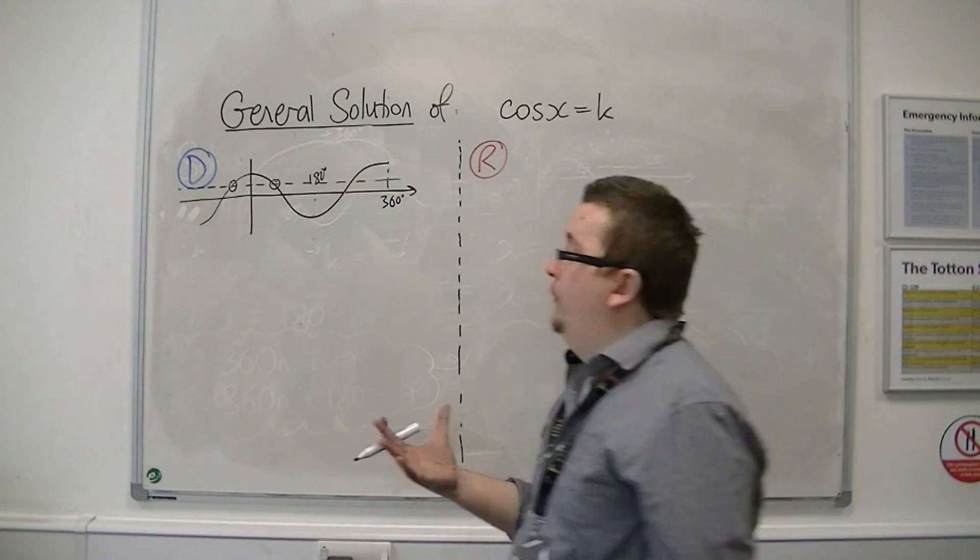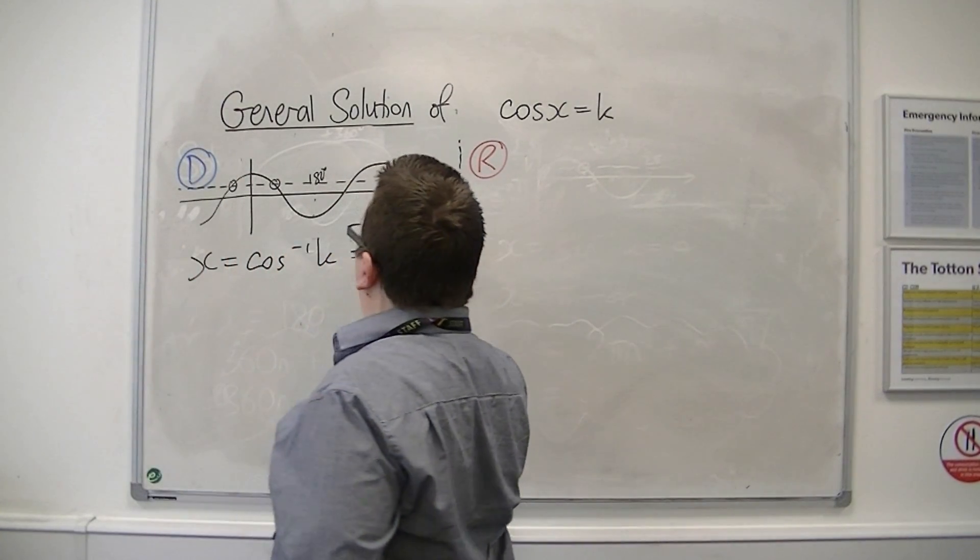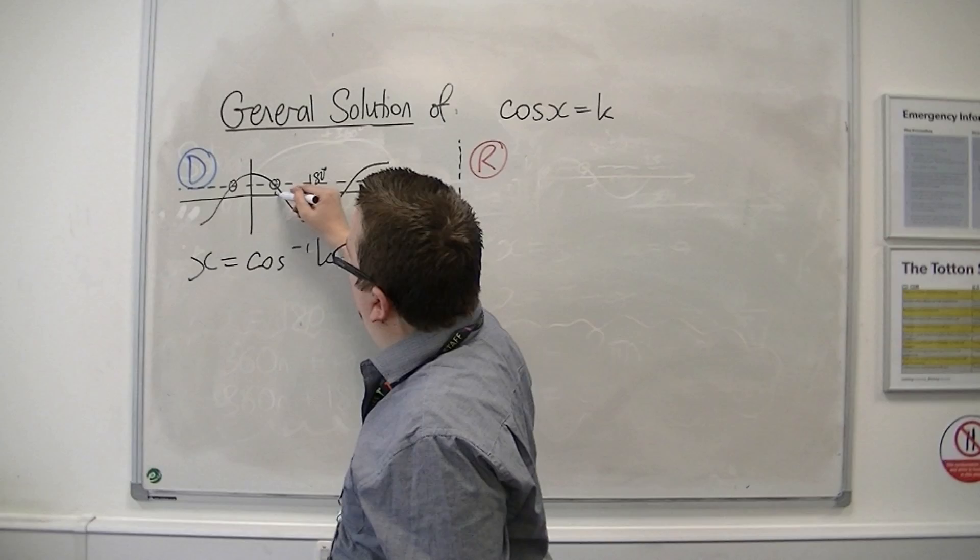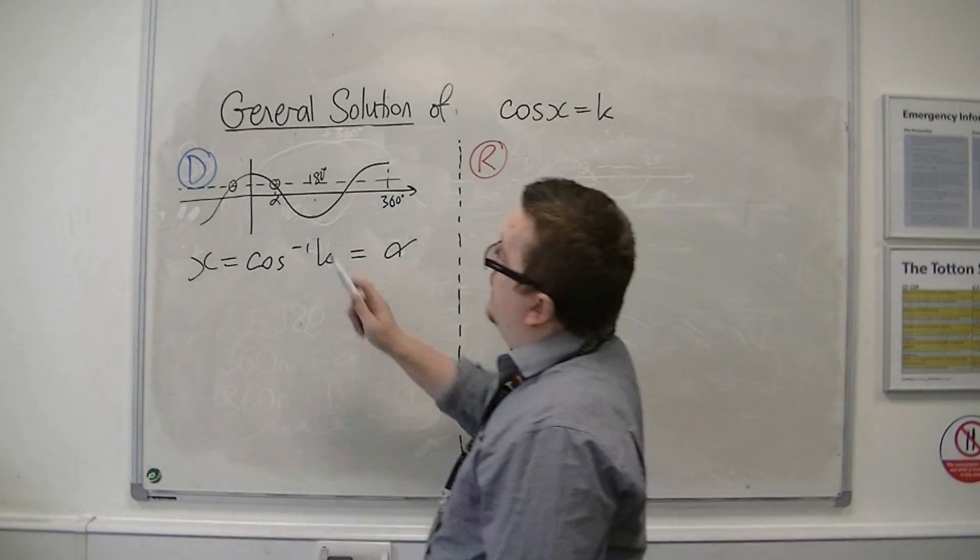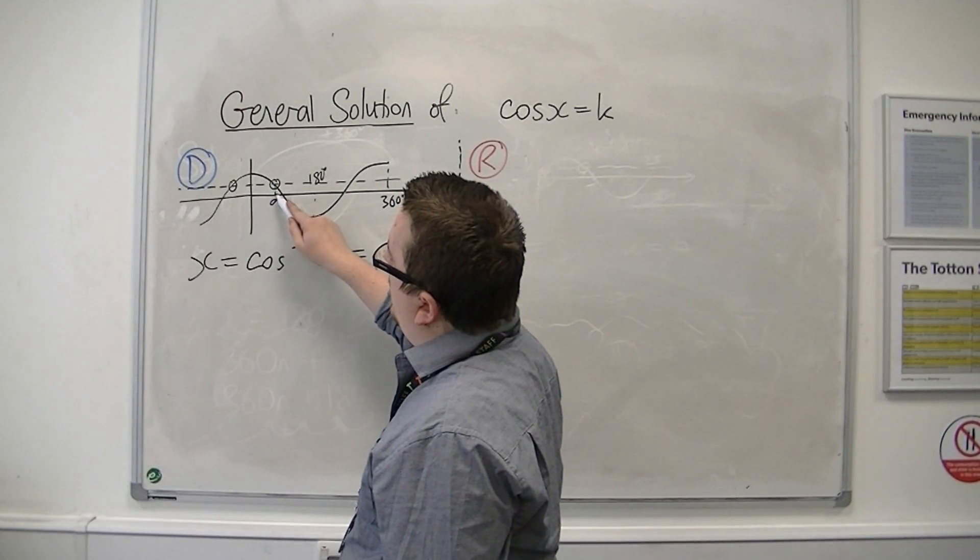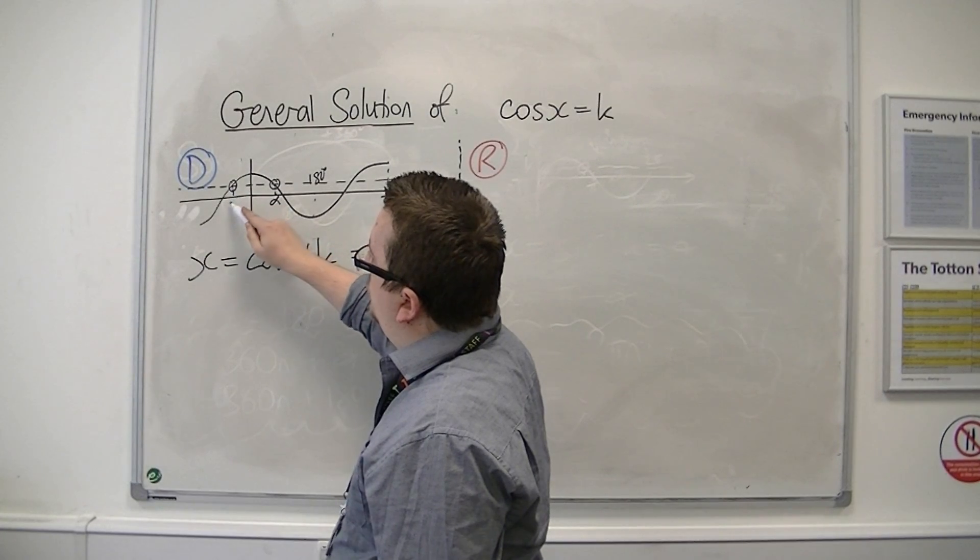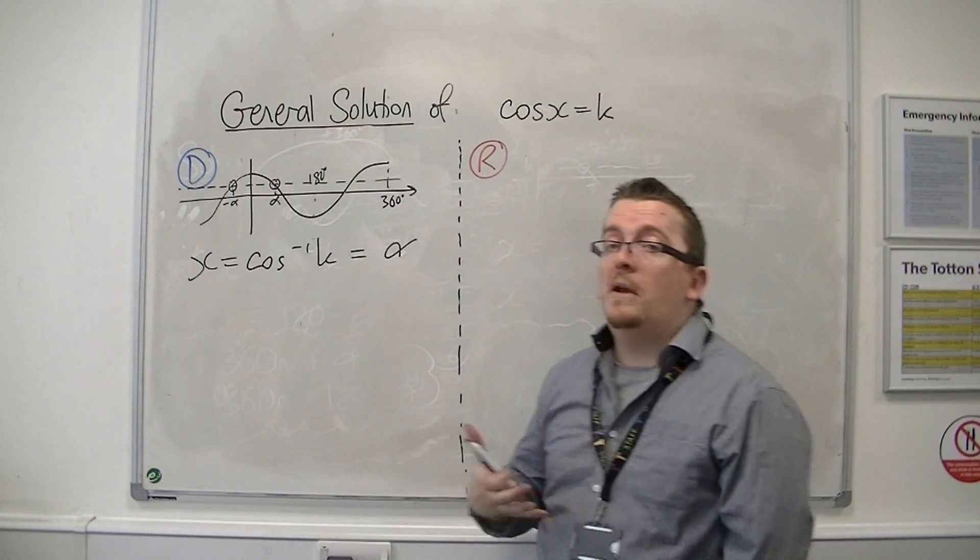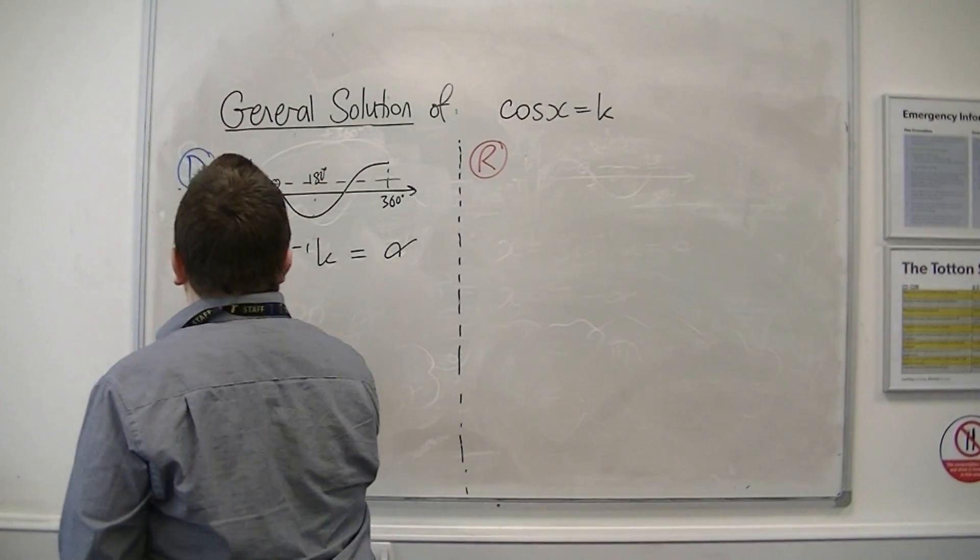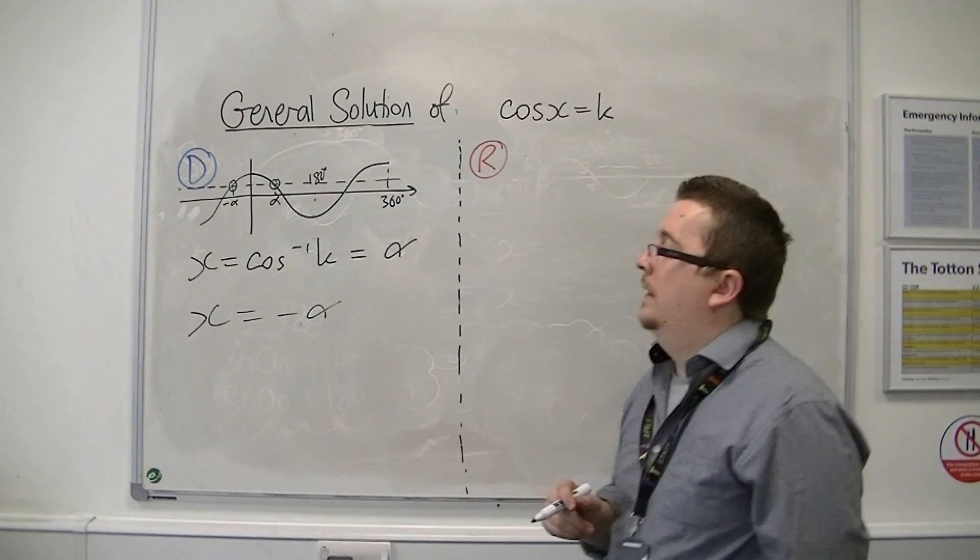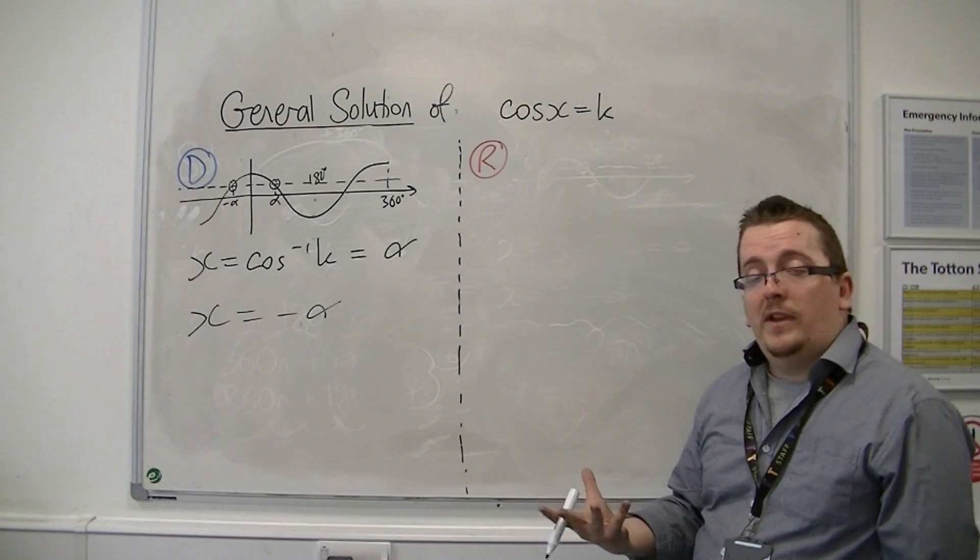So if I inverse cosine k, let's call that answer alpha. So this is the answer that I'd get, this alpha there. Now you can see that if this between 0 and the first solution is alpha, then this point should be minus alpha, because the curve is symmetric about the y-axis. And so another solution would be minus alpha. So we could say that x is equal to plus or minus alpha.